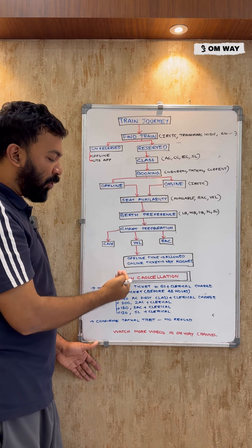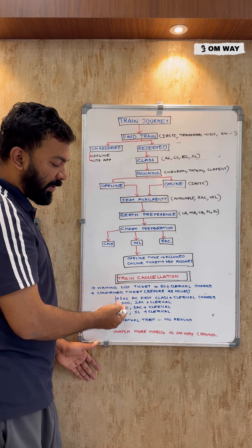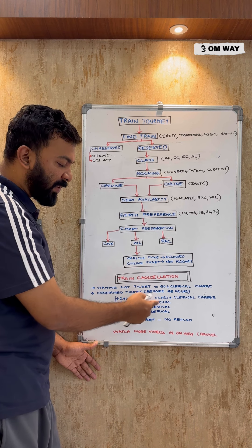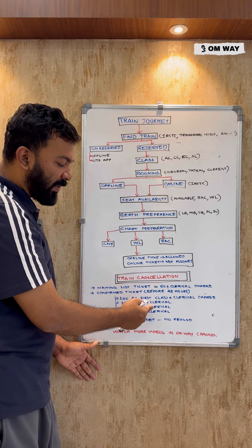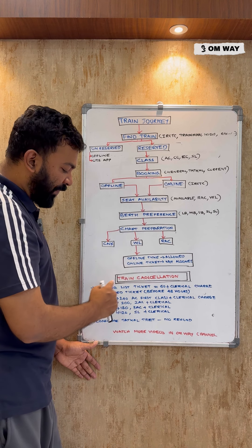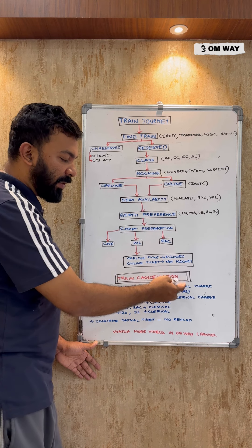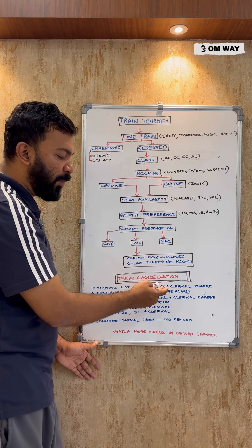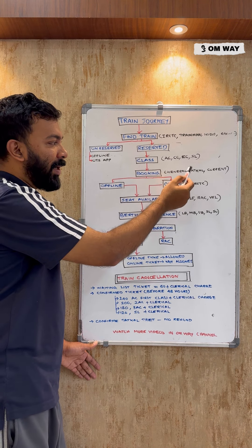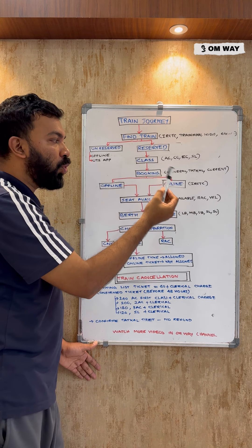If you want to cancel a train ticket, the charges are as follows: ₹240 for AC plus clerical charge, ₹280 for AC plus clerical charge, ₹150 for AC plus clerical charge. If you cancel a waiting list ticket, the charge is ₹60 plus clerical charge. There are three types: confirmed ticket, current ticket, and general ticket. A general ticket is valid for 3 months.